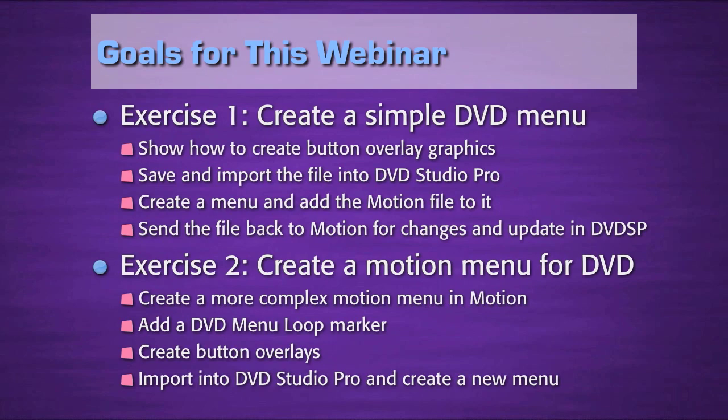Our goals for this webinar are to have two exercises. The first creates a simple DVD menu, showing how to create button overlay graphics, save and import the file into DVD Studio Pro, create a menu, add the motion file to it, then send the file back to Motion to make changes and have them automatically updated inside DVD Studio Pro. The second exercise goes to a different extreme — we'll create a more complex motion menu in Motion, add a DVD menu loop marker, create button overlays, and import everything into DVD Studio Pro to create a new menu.